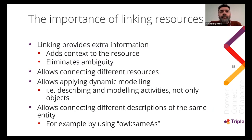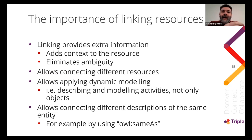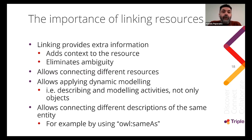Why is it so important to have linked entities assigned to specific categories? Because we can navigate in a semantic network — often called a knowledge graph. Linking provides extra information by adding context to the resource and thus eliminates ambiguity. Linking allows connecting different resources from various sources. It allows applying dynamic modeling — describing activities, events, relations, not only objects. And linking allows connecting different descriptions of the same entity, so many alternative representations of the same resource may apply and be compared to each other.